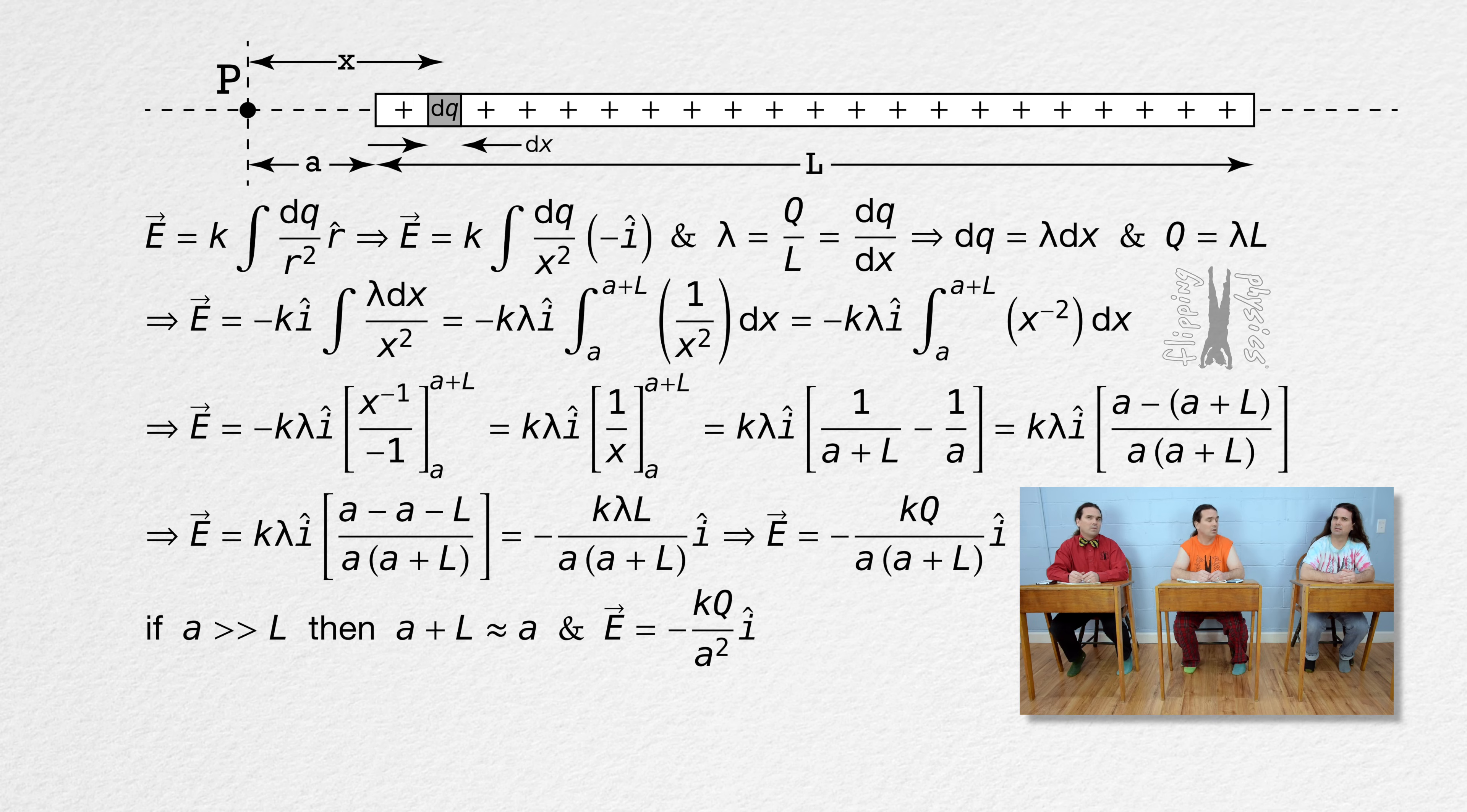Why? Because in the denominator, when we substitute in just A for A plus capital L, we get A times A or A squared. Okay, sure, but what does that mean? That means that if we get far enough away from the uniformly charged rod, it has the same electric field as if the uniformly charged rod were a point charge.